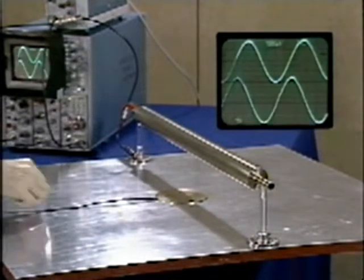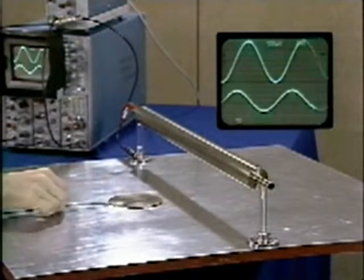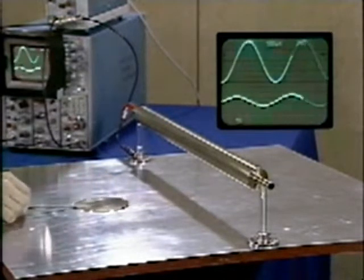As the probe is moved out from under the conductor, the lower scope trace shows the charge induced on its surface decreases.